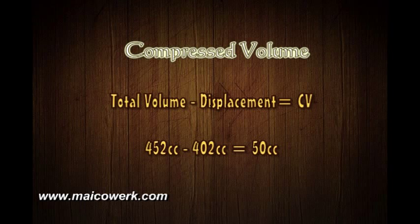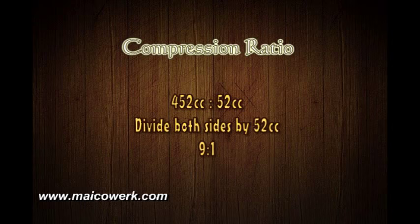The compressed volume is the total volume minus the displacement. This is because as the piston sweeps from bottom dead center to top dead center — the displacement size — what's left over is the difference between these two. So the ratio is 452cc to 52cc. We can simplify this by dividing both sides by 52cc to get a 9 to 1 compression ratio.